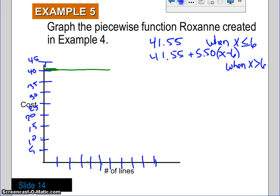So, 1, 2, 3, 4, 5. Here is six lines. So, coming up, that is where it's going to then start going up at 5.50 a line. So, that's what your graph is going to look like. It's going to be a flat line for those first six lines. And then it's going to start going up for each additional line.